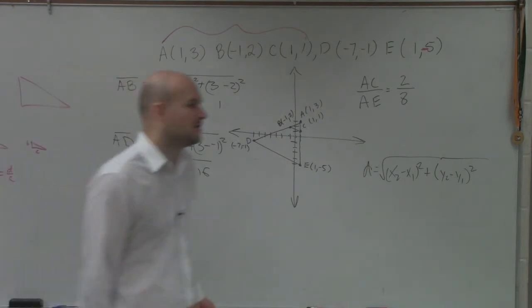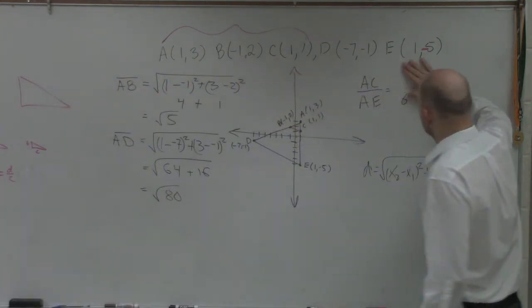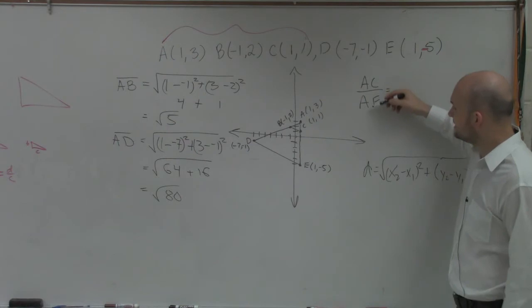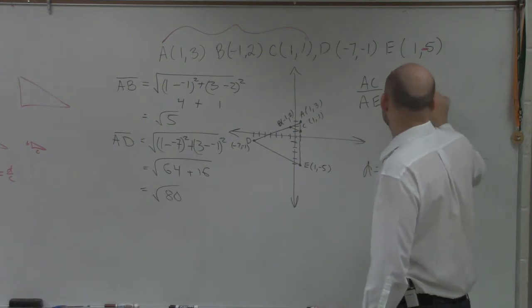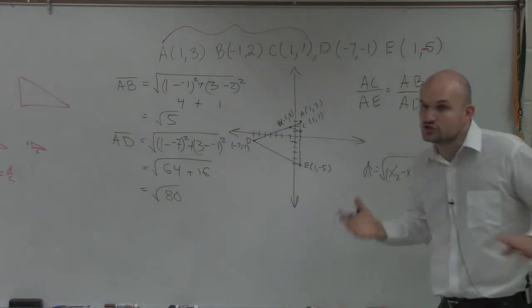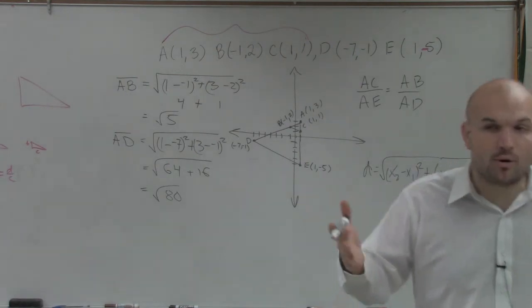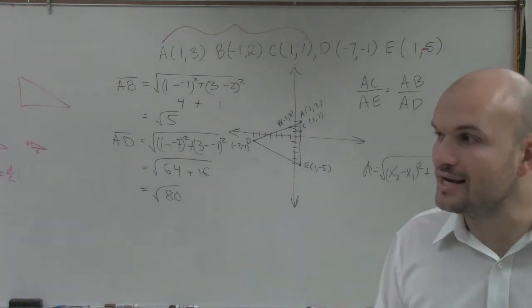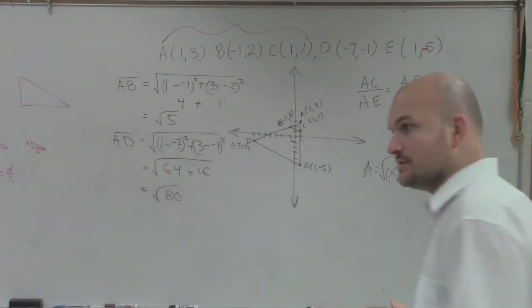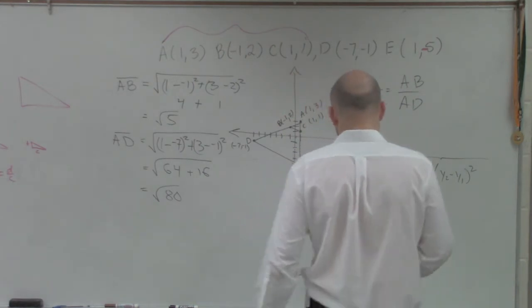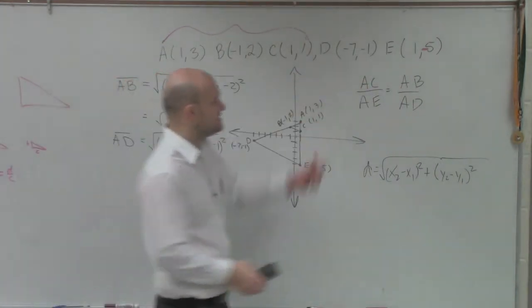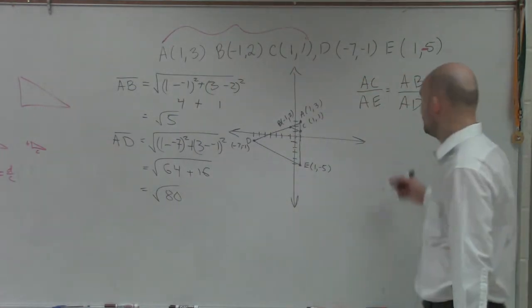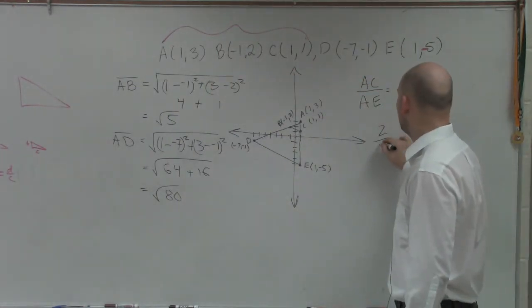So if we follow our same logic here, AC is to AE, which we know that was 2 to 8, right? AC is to AE as AB is to AD. If we can show that those two triangles are proportional, then we have a proportion. If we can show that they're equal to each other. So let's go back into our lengths that we had. We knew that AC over AE was 2 over 8. Everybody agrees with me on that?